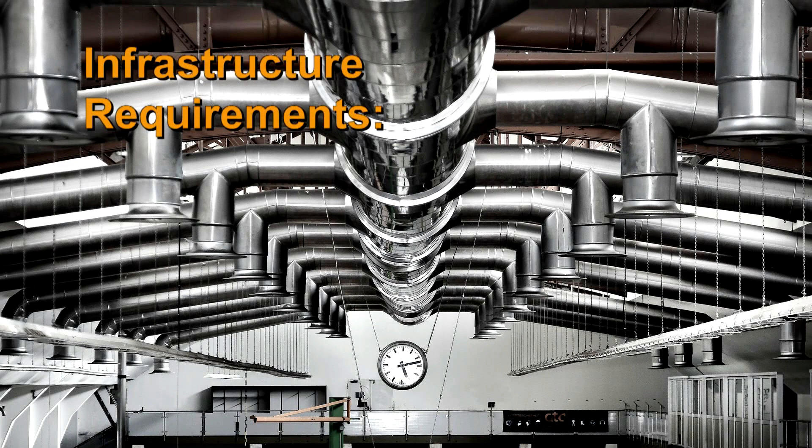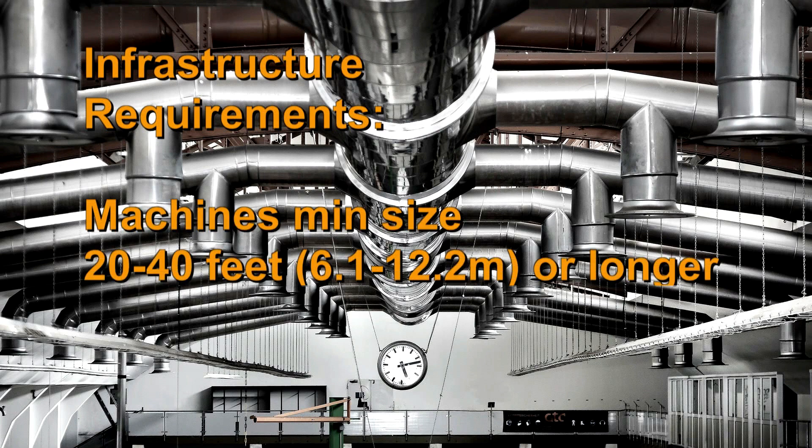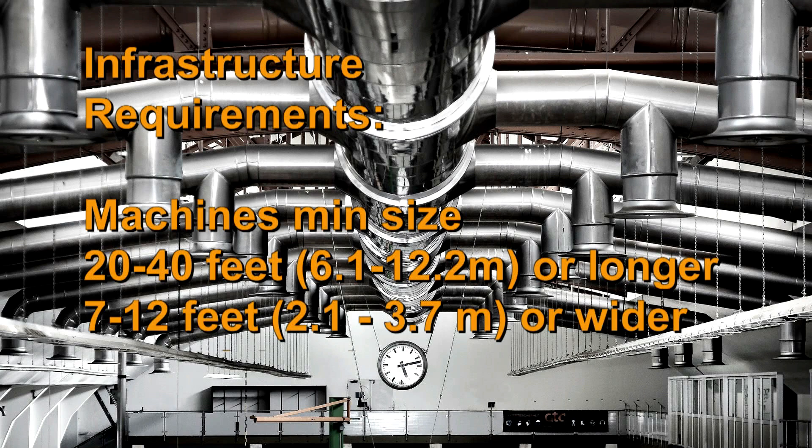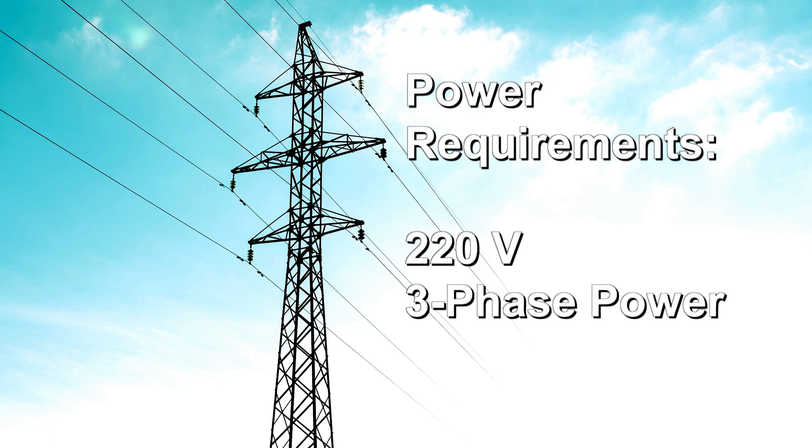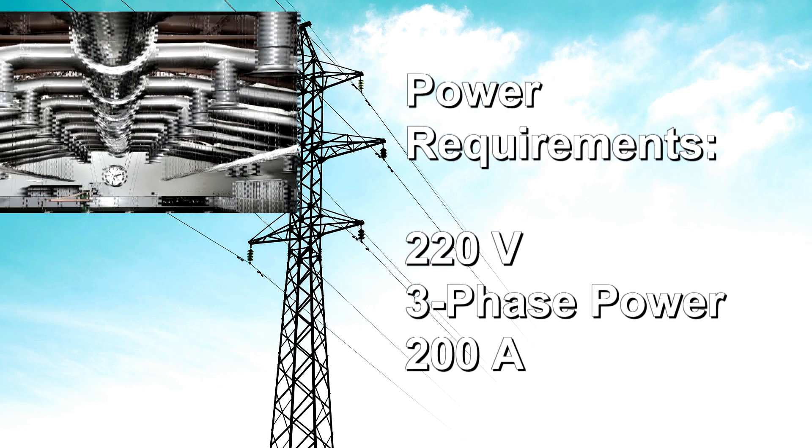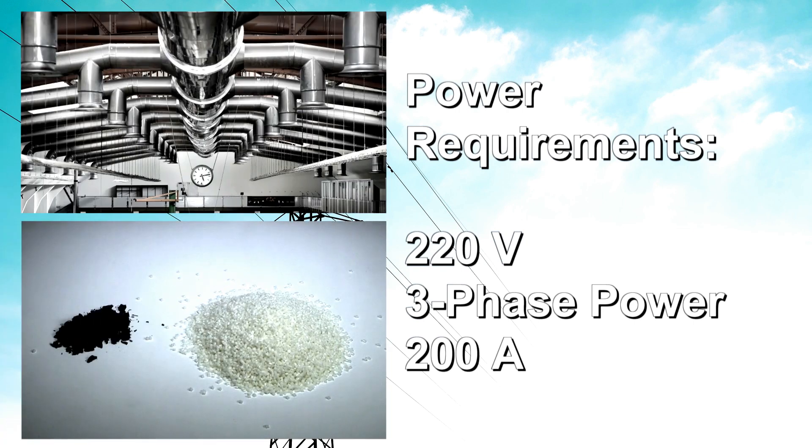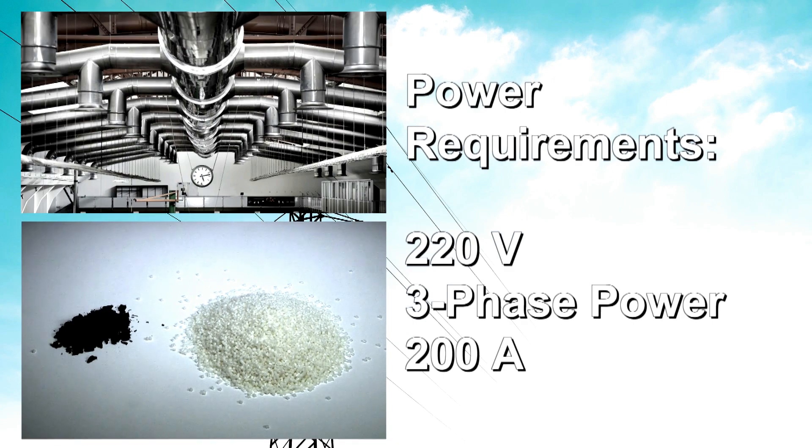A lot of recycling equipment can be anywhere from 20 to 40 feet long or longer. It can easily be 7 to 12 feet wide. And equipment like this often will consume, say, 220 volts, three-phase power, and say 200 amps. You need this kind of power. You need this raw material. And then you need a market for all of the products that's going to result.